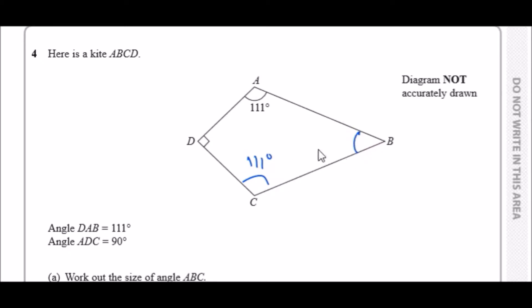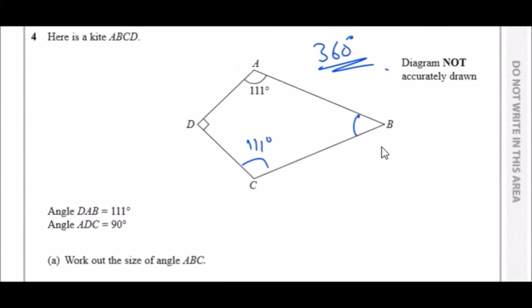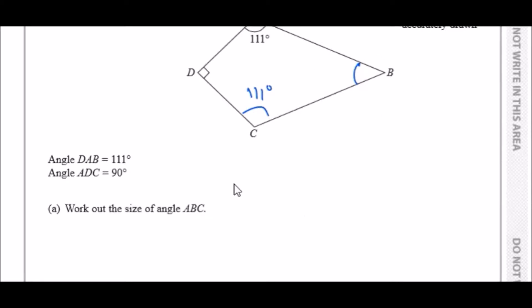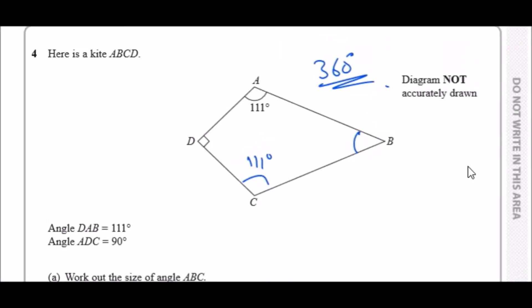The interior angles add up to 360 degrees because it's four-sided, and we can work out this one. Work out the size of angle ABC. There we go, that's exactly what we need to do. So find this angle here. In your calculator just add up these sides.